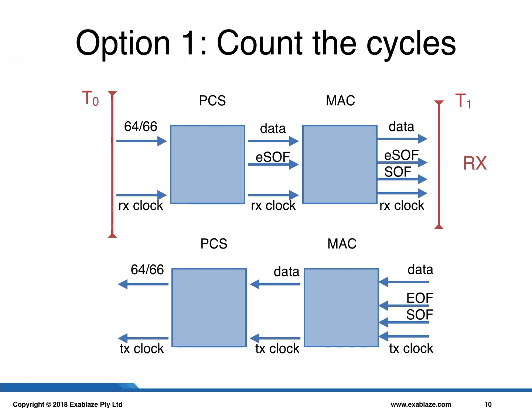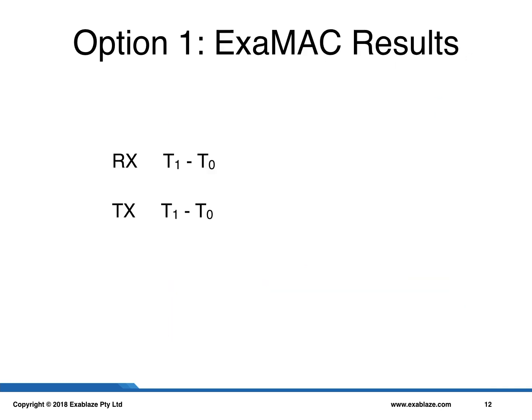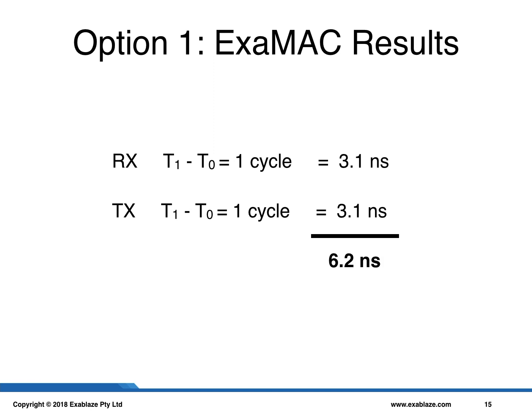We take our first measurement starting at the input to the PCS and finishing at the output of the MAC, and repeat this process for the transmit side. Throughout this presentation, I will be providing concrete examples from our high-performance ExaMac device. The results are: on the RX side, one cycle; on the TX side, also one cycle. The clock speed used is 322 MHz, meaning each cycle is 3.1 ns. Therefore, the total delay through the PCS MAC is 6.2 ns.